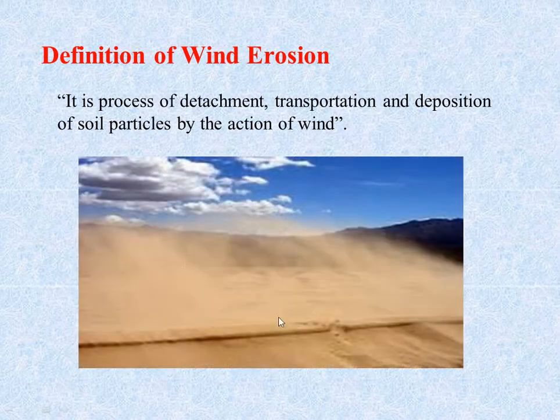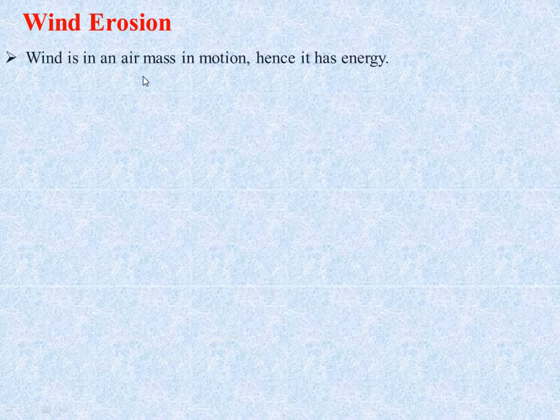The figure below shows how wind erosion takes place. Before understanding wind erosion further, we need to understand what is wind. Wind is an air mass that has some mass and velocity.